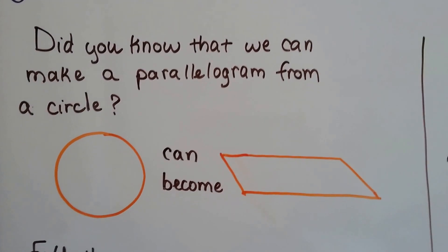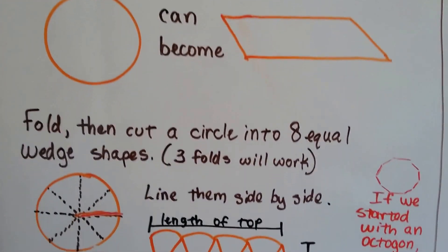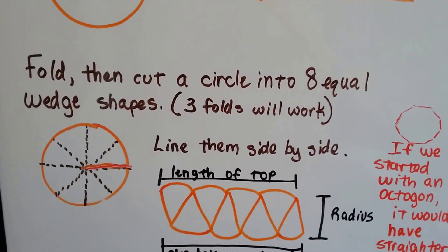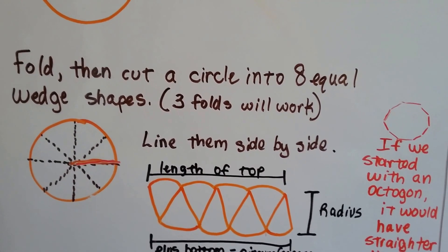Did you know we can make a parallelogram from a circle? Yep, that circle can become a parallelogram. If we have a circle and we fold it, then cut it into eight equal wedge shapes. Three folds will work.